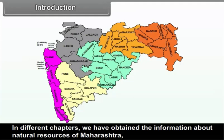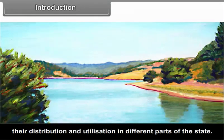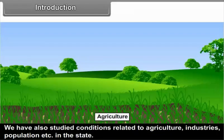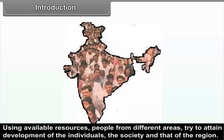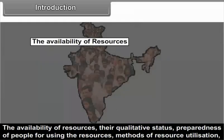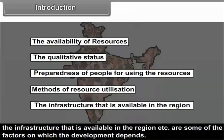In different chapters, we have obtained information about natural resources of Maharashtra, their distribution and utilization in different parts of the state. We have also studied conditions related to agriculture, industries, population, etc. in the state. Using available resources, people from different areas try to attain development of individuals, the society and that of the region. The availability of resources, their qualitative status, preparedness of people for using the resources, methods of resource utilization, and the infrastructure available in the region are some of the factors on which development depends.